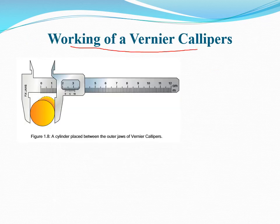Working of Vernier Calipers — that is, how we can take a reading on Vernier Calipers. Let's find the diameter of a solid cylinder using Vernier Calipers. For this purpose, place a solid cylinder between jaws of the Vernier Calipers as shown in the figure. Close the jaws till they press the opposite sides of the object gently. Note the complete divisions of the main scale past the vernier scale zero. Here, the zero of the vernier is just passing the 2.2 cm on the main scale.